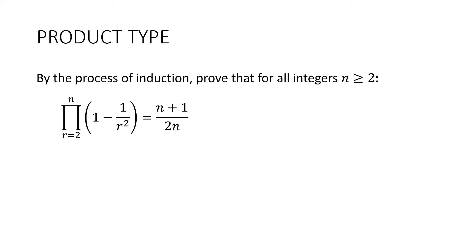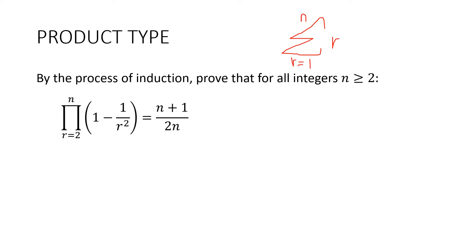Here's one you probably haven't seen — the product type. Recall the large sigma sign means sum. The product symbol means multiply the expression going up from two in this case up to n — substituting two, three, four, dot dot dot all the way up to n. It's very similar to the summation proof and will use a similar induction. Step one: show it's true for n equals two — we're starting at two instead of one in this case. Substituting two into the left hand side gives three quarters, and substituting two into the right hand side also gives three quarters. Therefore it's true for n equals two.